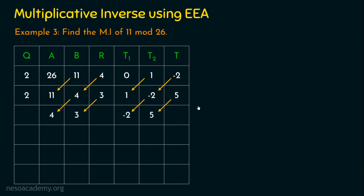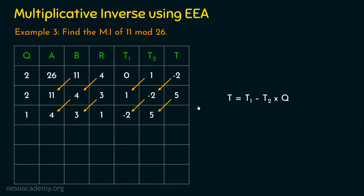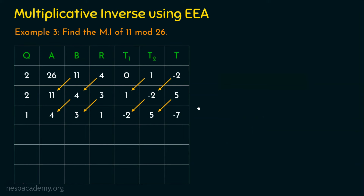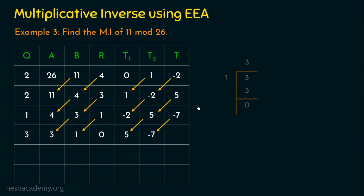We continue the algorithm. After shifting, we perform A mod B again with the updated values, getting a quotient of 1 and a remainder of 1. Computing T gives minus 7, which is filled in the table. Running the algorithm again, we shift values and perform A mod B, getting a quotient of 3 and a remainder of 0, with T computed as 26.